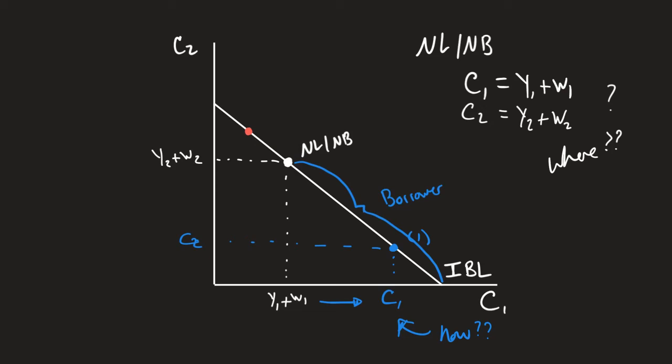So let's say we're up here in this red mark where we have a much higher level of consumption in period two, a much lower level of consumption in period one. Now, if I want to consume more in period two than what these period two resources are, right? These are my period two resources, but I'm consuming more. How is that possible?